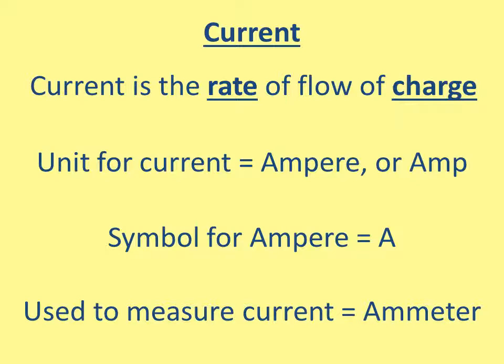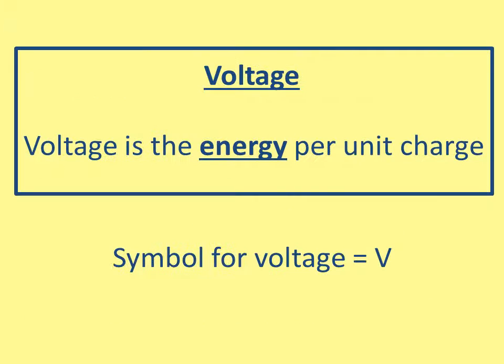The unit of current is the ampere, or amp, named after a French physicist, and it has the symbol capital A. This is very different from the symbol for current, which is capital I. You must be comfortable recognizing the difference between the two: the symbol for current is I, the unit is the amp with symbol A. To measure current, we use an ammeter.